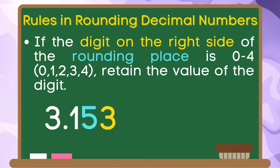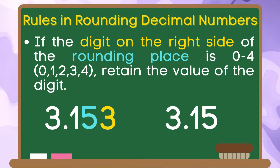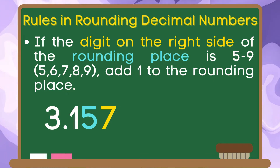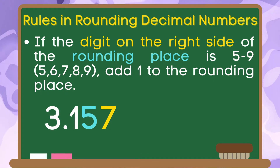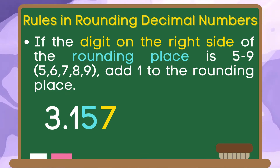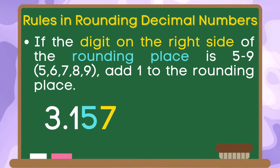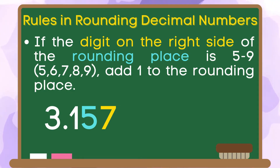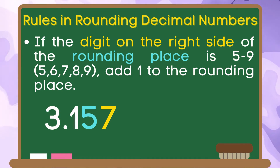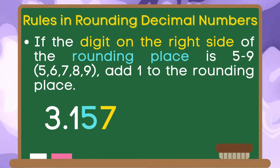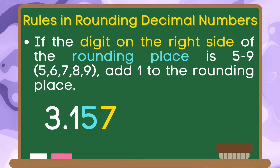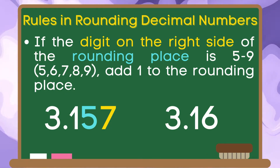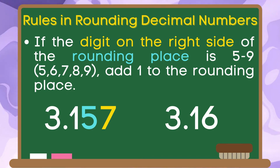Therefore, the rounded number of 3 and 153 thousandths is 3 and 15 hundredths. Another rule in rounding numbers is if the digit on the right side of the rounding place is 5 to 9, add 1 to the rounding place. For this example, we have 3 and 157 thousandths. The digit that we are going to round is 5. The number at the right side of 5 is 7. Since 7 belongs to the group of 5 to 9, we are going to add 1 to our rounding digit 5 and that will become 6.